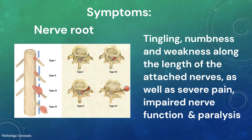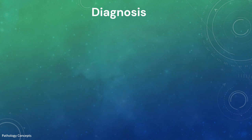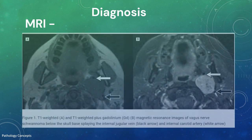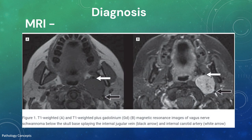For diagnosis, certain imaging studies are useful, including CT scan and MRI. MRI usually shows a round or oval mass with moderately bright signal on T1-weighted images and a bright heterogeneous signal on T2-weighted images. The mass is usually less than 2.5 centimeters in size. The lesion enhances uniformly with gadolinium contrast.